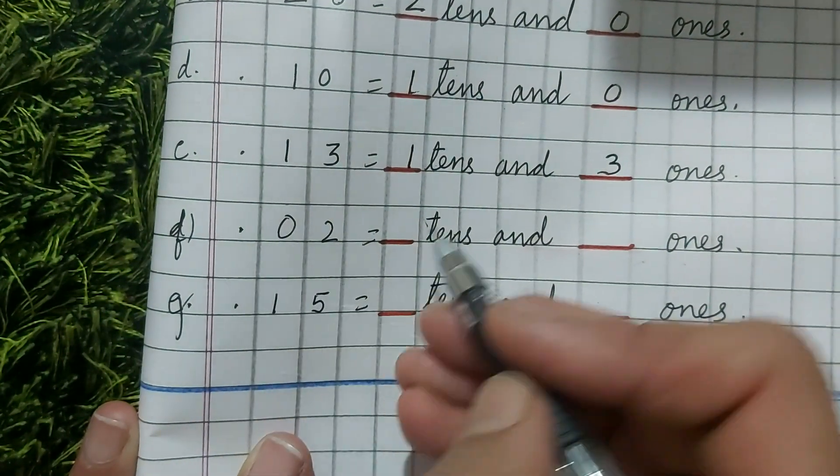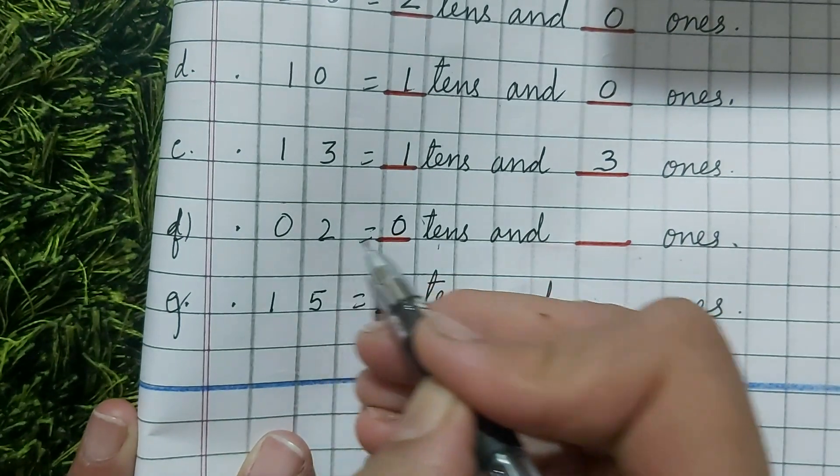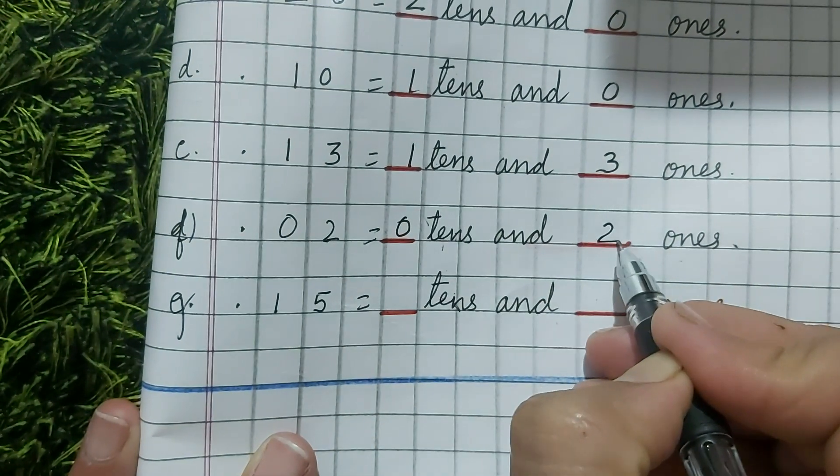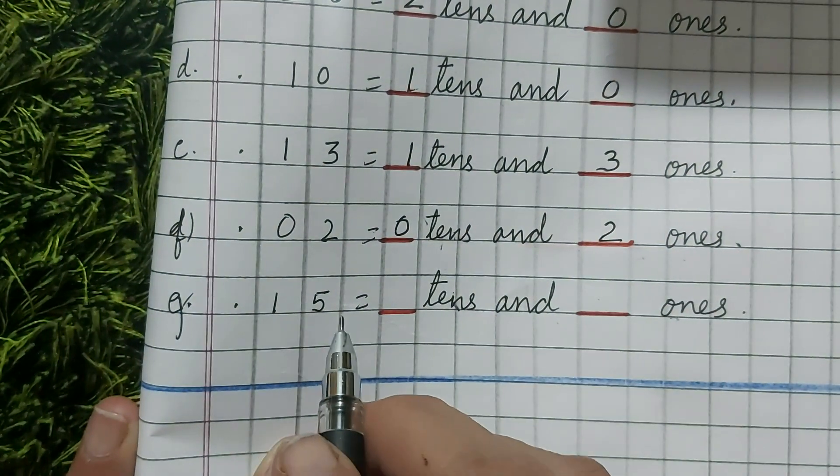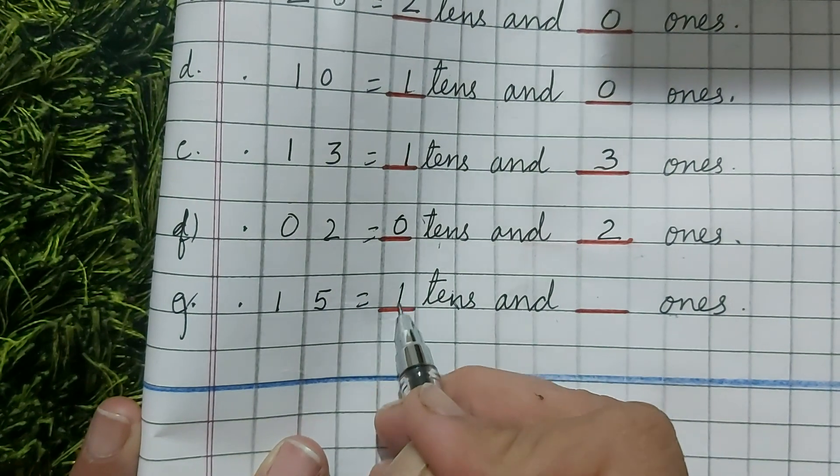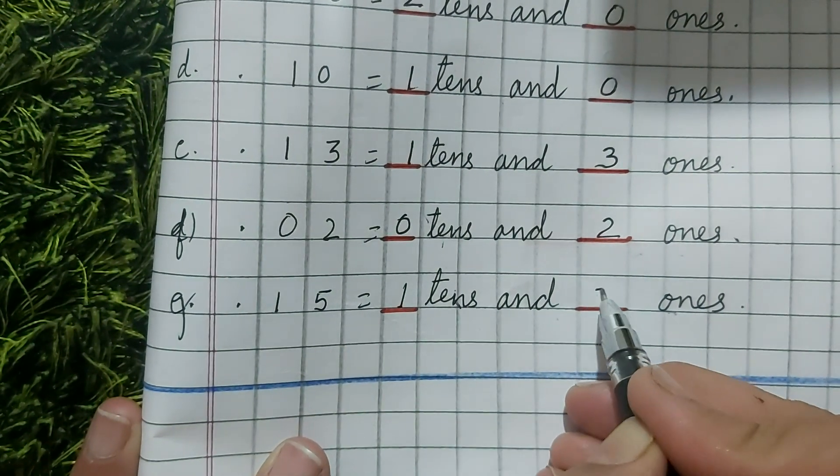02. 0 tens. And 2 ones. 15. 1 ten. And 5 ones.